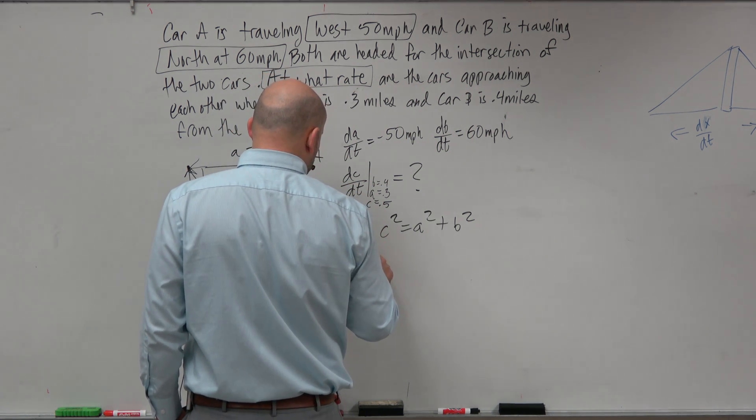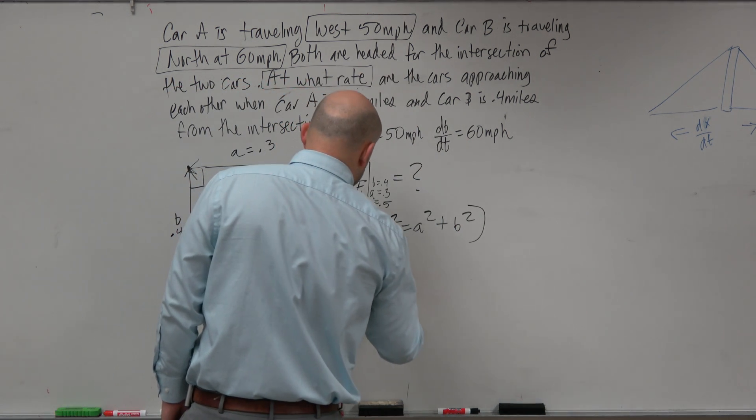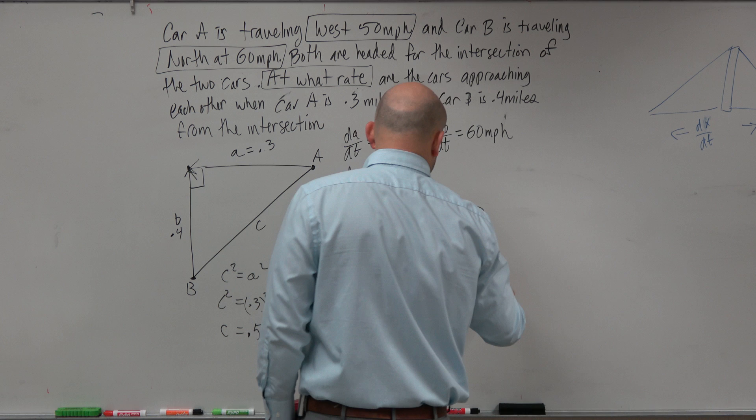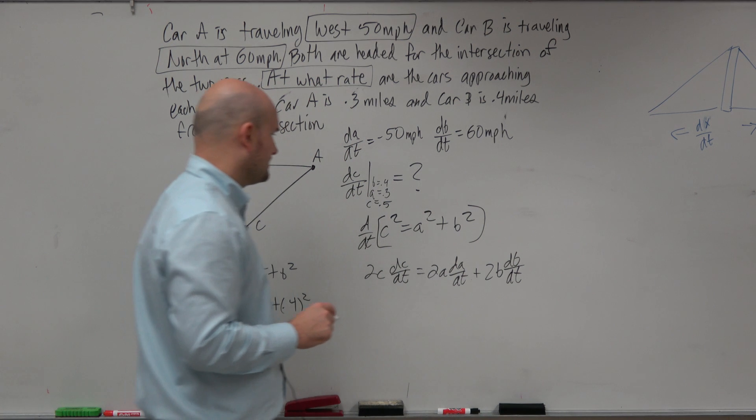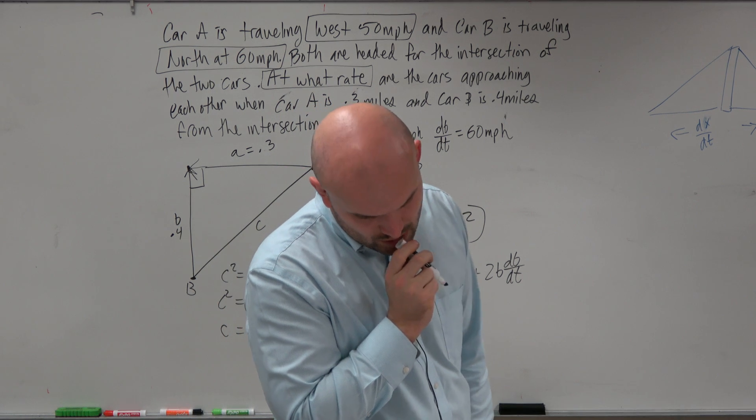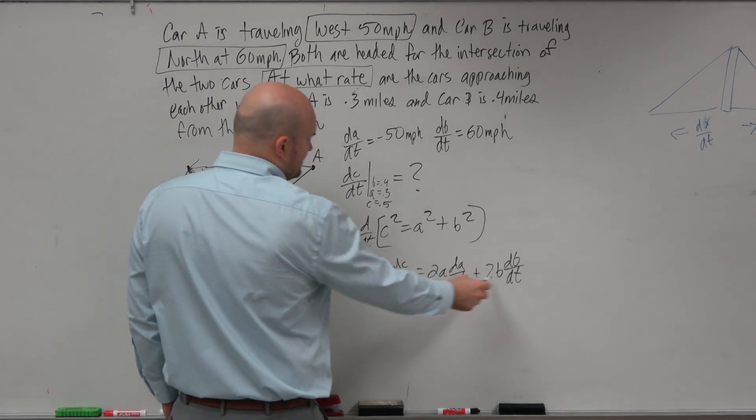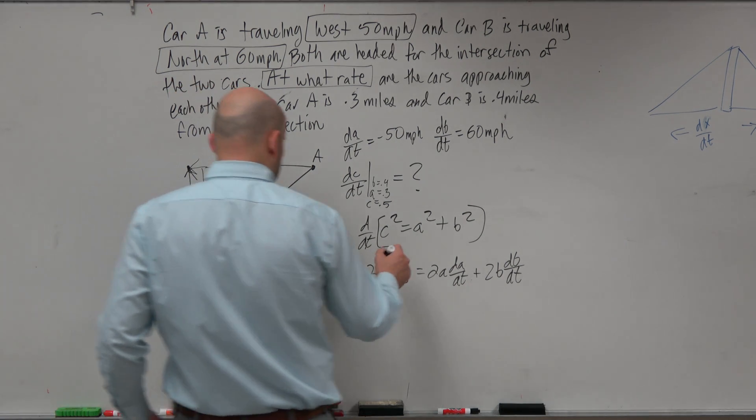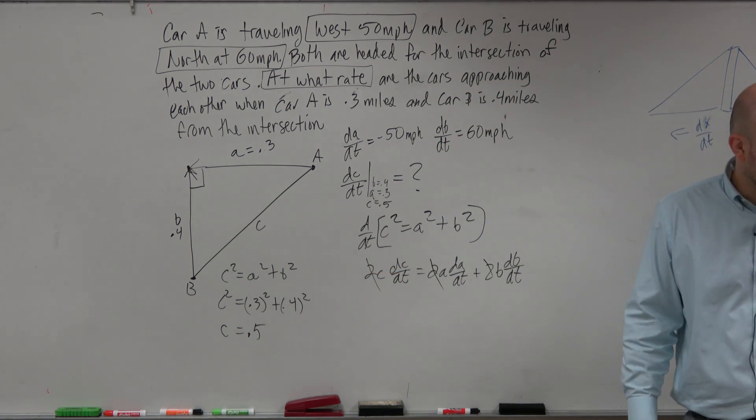If we go ahead and differentiate with respect to time because we have rates, we're going to have 2C dC/dt equals 2A dA/dt plus 2B dB/dt. We could obviously divide out a 2 in all of these. We are looking for dC/dt, so everything else, I'm just going to not worry about the 2s. You guys agree if I divide by 2 on both sides it's just going to go away.